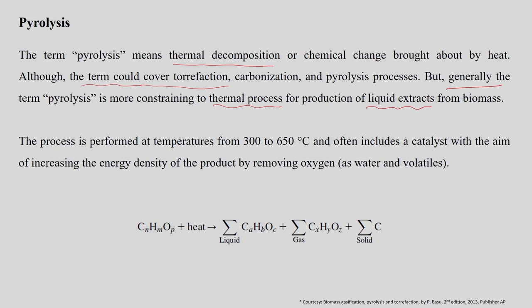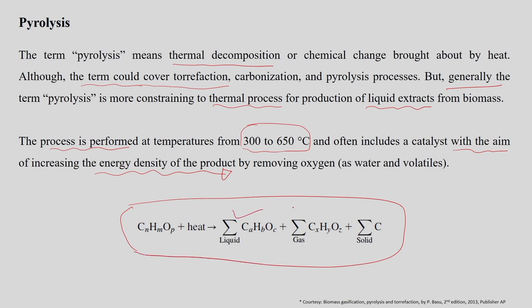Apart from liquid, pyrolysis also leads to the production of char and gas as products. The process is performed at a temperature range of 300 to 650 degrees C and often includes a catalyst, with the aim of increasing the energy density by removing oxygen from the biomass to produce high energy dense liquid fuel. The pyrolysis process breaks down large molecular weight hydrocarbon compounds in the biomass into low molecular weight compounds — mainly condensable gases which can be condensed to produce liquid bio-oil — along with certain fractions of gas and solid char.